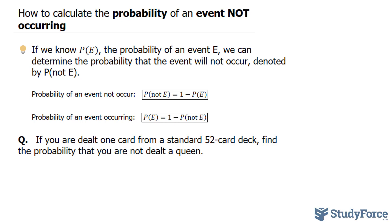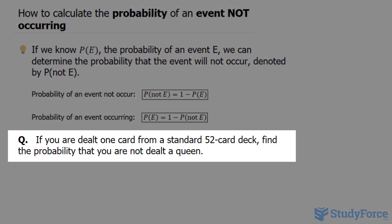And with that being said, the question reads: if you are dealt one card from a standard 52-card deck, find the probability that you are not dealt a queen.